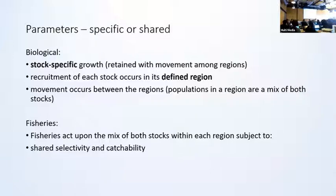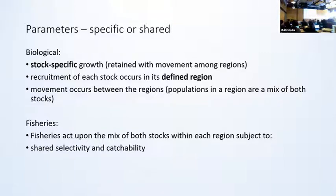The parameterization that differed from the multi-species case for this multi-stock example: in terms of biology, the recruitment of each stock is now region-specific — for the multi-species case, one would have the recruitment potentially occurring among all regions. So the recruitment originates in one of the regions and then thereafter with movement, the populations then comprise a mixture of the two stocks in each region. With regards to the fisheries, the selectivity at length and catchability could be shared in the fisheries having aggregated data. Note that all the fisheries impact upon both stocks within a region, and stock fishing mortalities are being estimated for these fisheries that comprise a mixture of the two stocks.